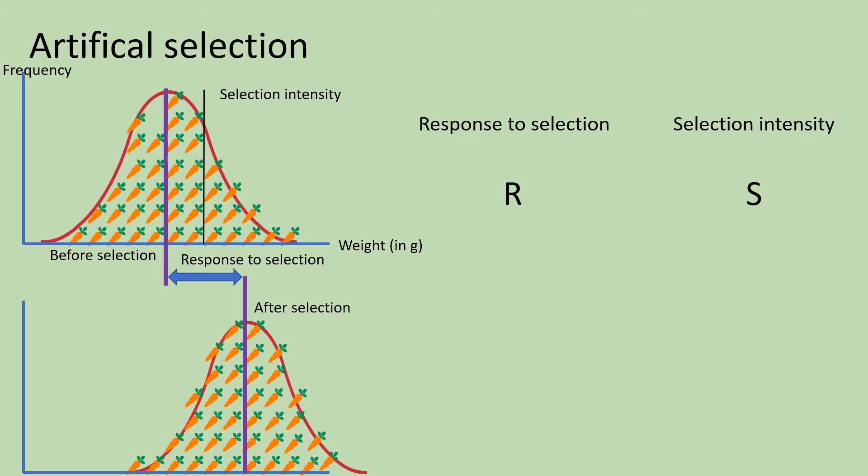This response is obviously proportional to the intensity of selection, and the coefficient of proportionality is none other but the narrow sense heritability. Otherwise put, heritability tells us how well a population will respond to a given selection intensity and can also be expressed as the response to selection relative to the selection intensity we have applied.